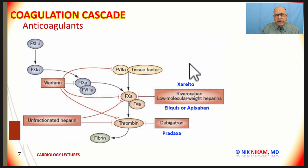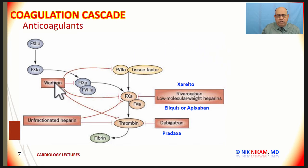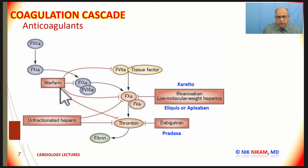Now let us talk about anticoagulants and their mechanism of action. First, warfarin or Coumadin. Coumadin acts on multiple sites: namely factor 7, which is involved in the extrinsic pathway; factor 10a, which is the common pathway; and warfarin also acts on thrombin. So it is important to remember that warfarin acts at multiple sites — factor 7, factor 10a, and thrombin.